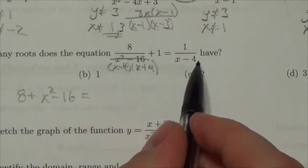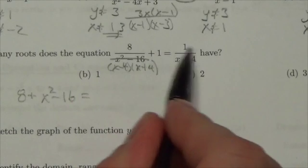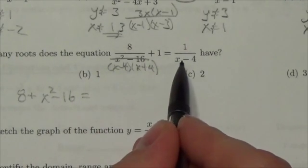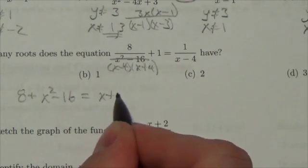Now on the right-hand side, there's a denominator of x minus 4. If I multiply the numerator here by x squared minus 16, that x minus 4 will cancel with this one. All I'll be left with up in that numerator is the x plus 4.